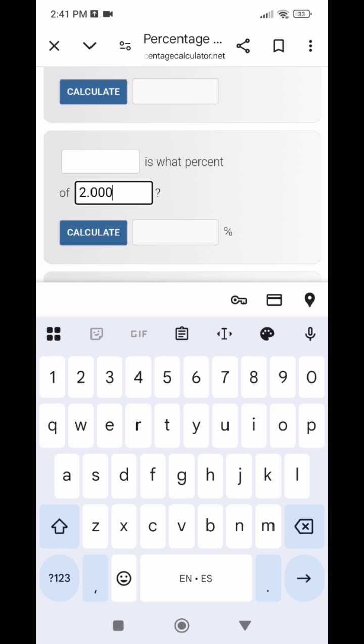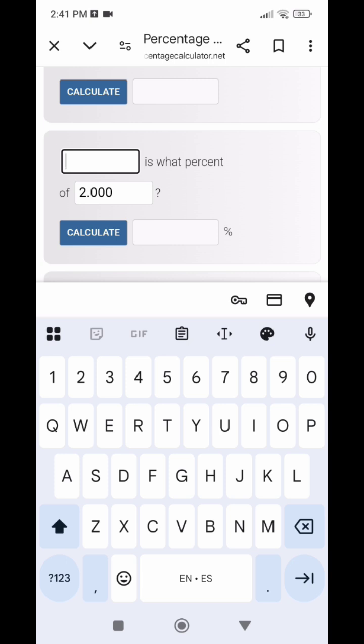Now I'm going to calculate how much is 0.500 of two grams. The result is 25 percent.